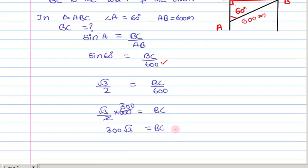So I substitute it here. We know that sin A, means sin 60 degrees, is equal to BC by AB, which is 600. We know sin 60 value as root 3 by 2, so it is equal to BC by 600.